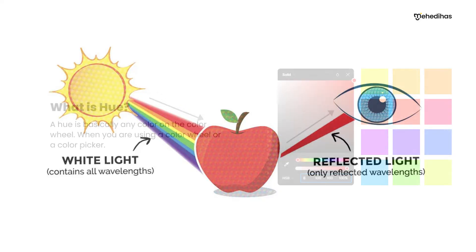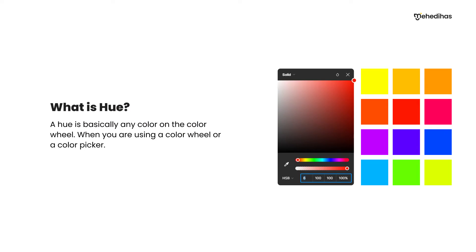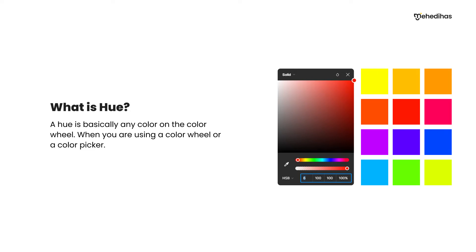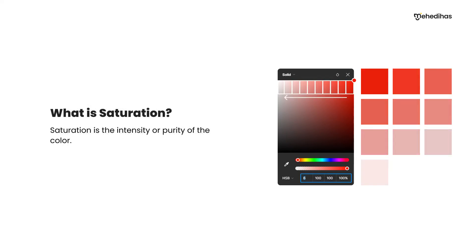Now we will know the color properties. The first is Hue. Hue is basically any color on the color wheel. When you are using a color wheel or a color picker, hue is the pure color — red, yellow, green, blue. Those are pure hues.